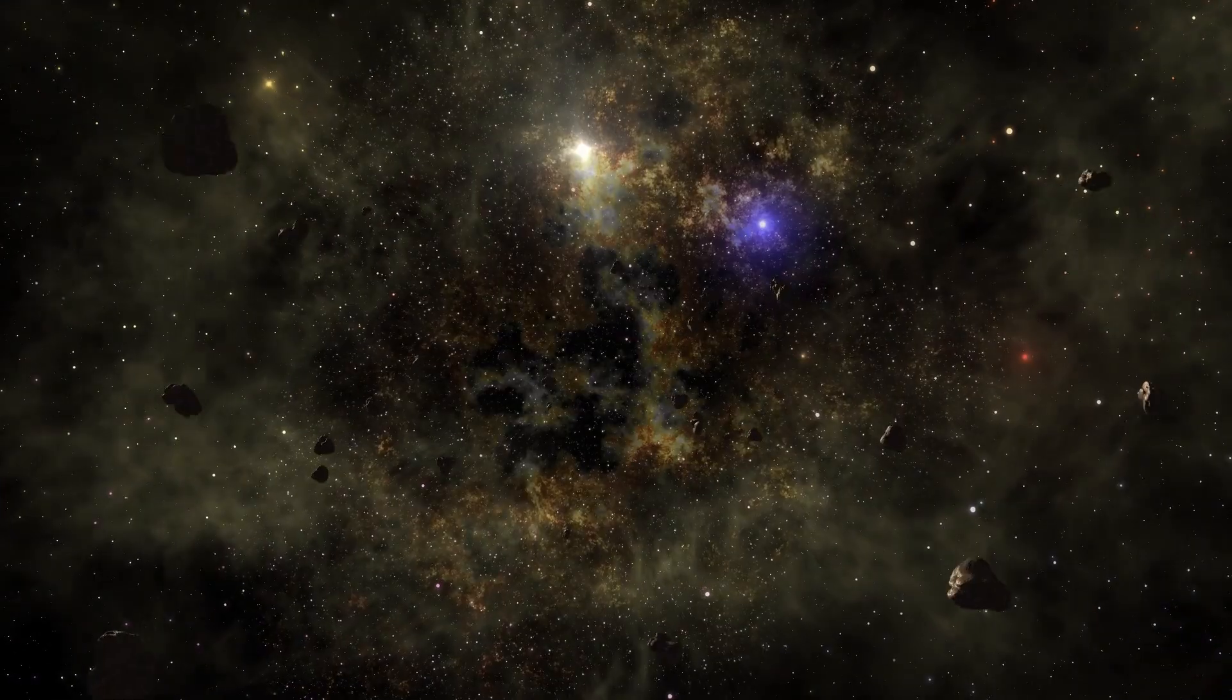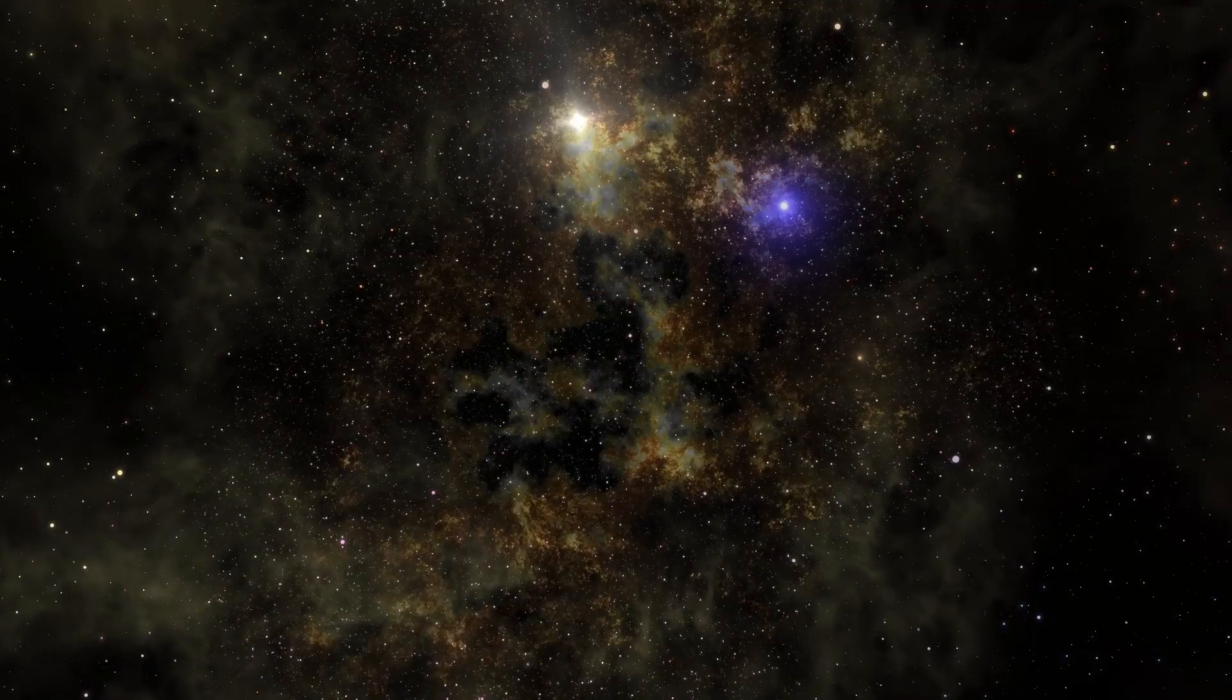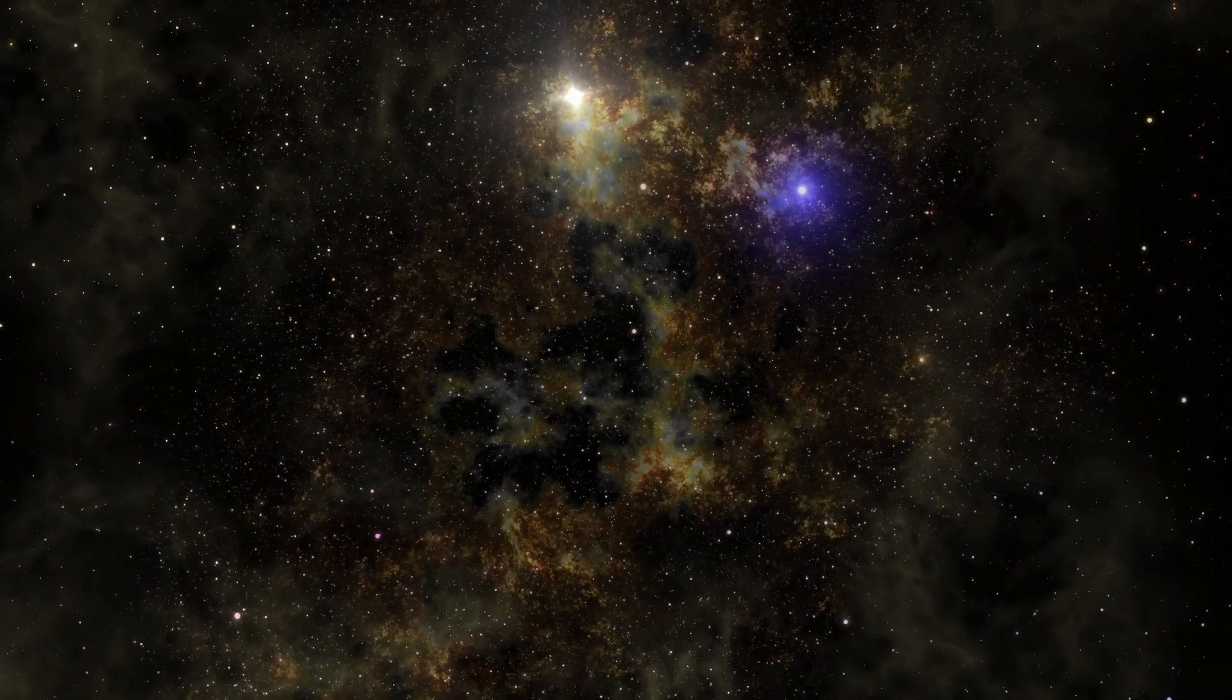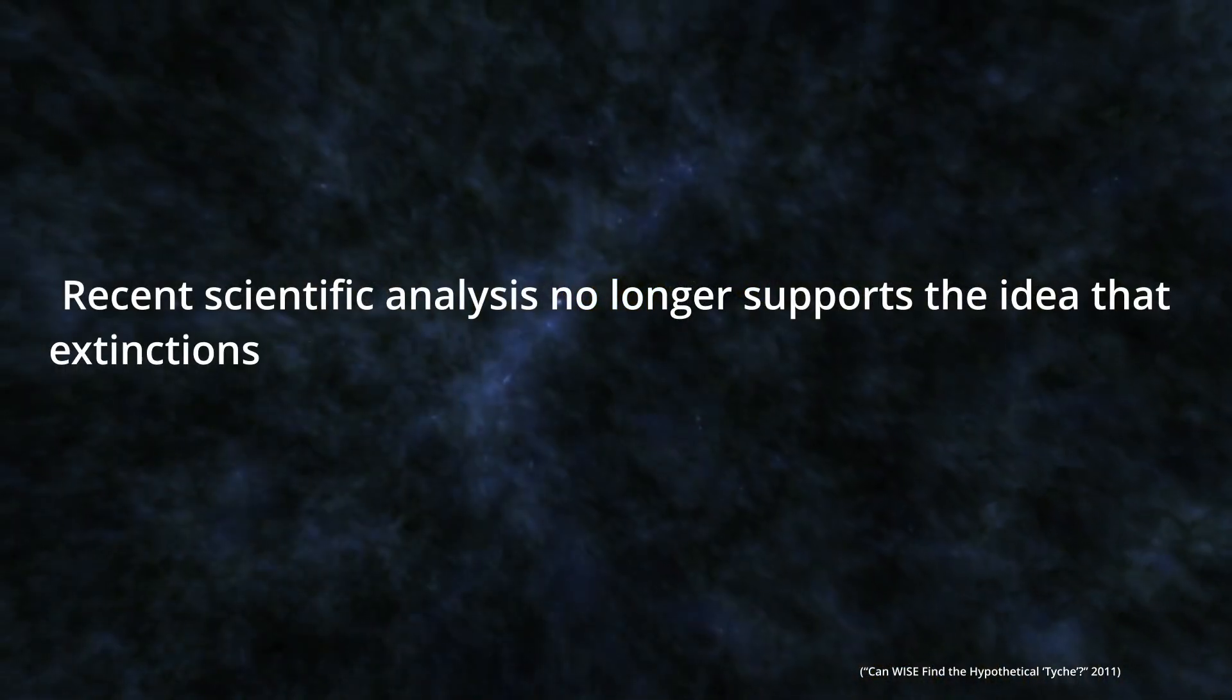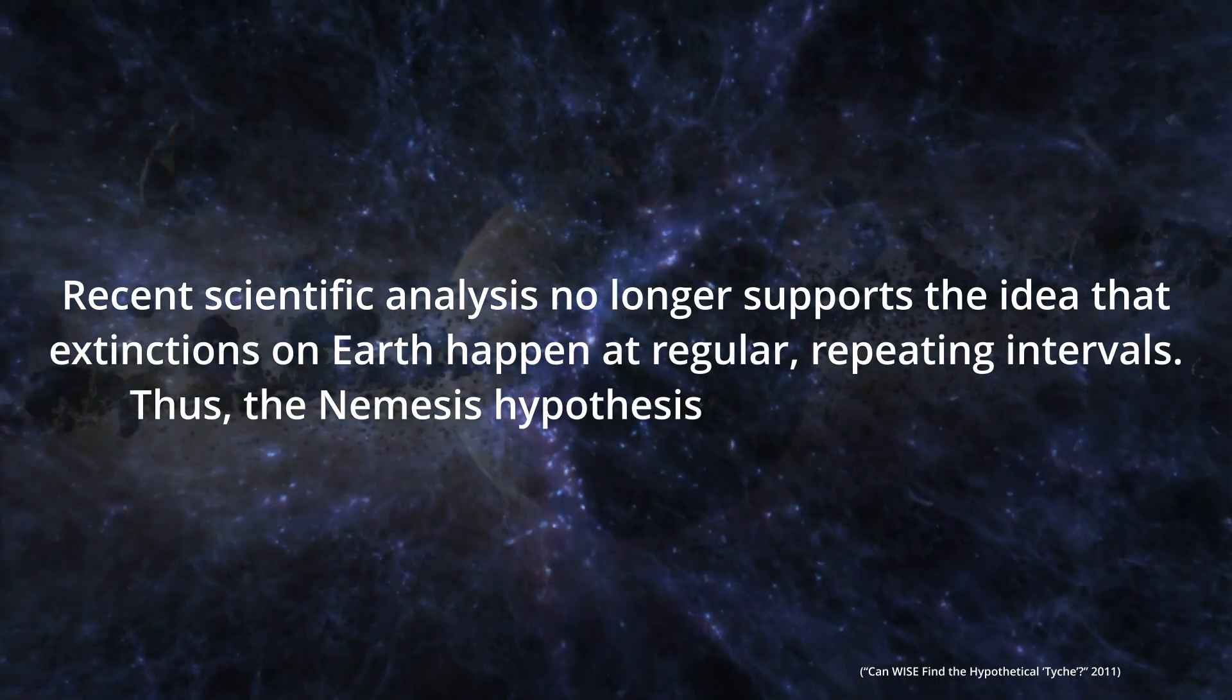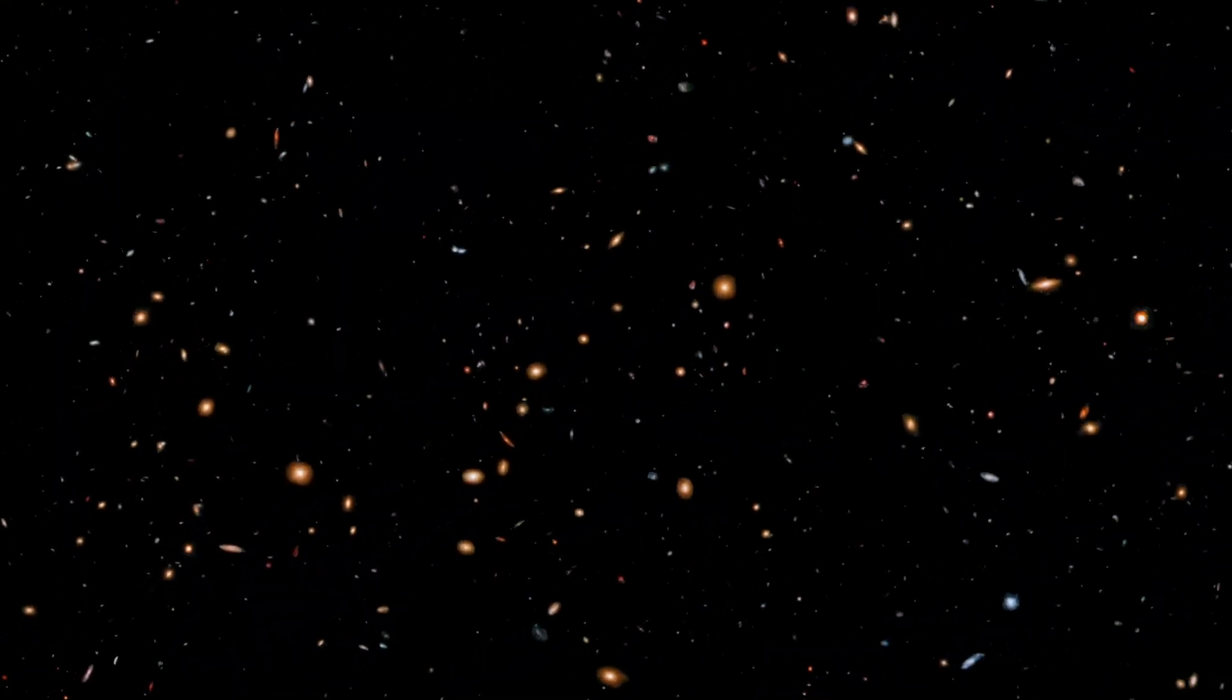The real nail in the coffin is the fact that the Nemesis theory is no longer needed. As technology improves and we get more data, what might have looked like a cycle in the 1980s no longer does in the 21st century. The same NASA article from earlier also says, recent scientific analysis no longer supports the idea that extinctions on Earth happen at regular, repeated intervals. Thus, the Nemesis theory is no longer needed. We don't need the Nemesis theory anymore, because it's the solution to a problem that never existed.